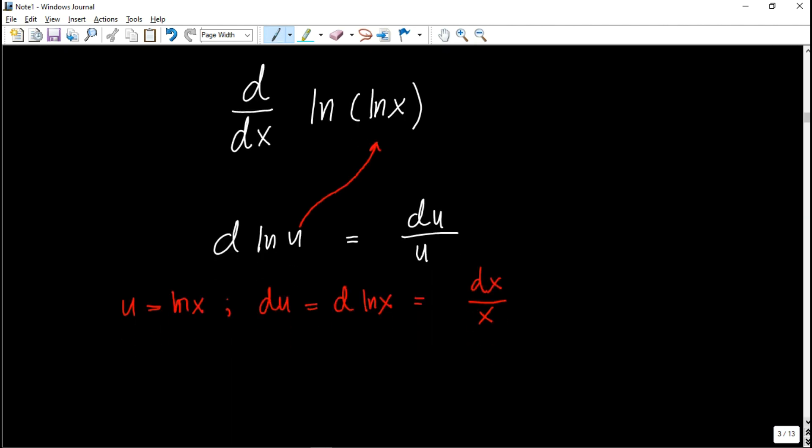The next step is to substitute all of this into our original formula. So what is u here? The derivative of ln(ln x), where u is ln x.